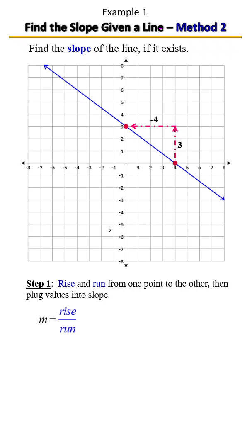You can also, going from one point to the other, start with the y intercept. And instead of rising up, we'll fall down 3 — that's still going to be your numerator. And we're going to run a 4 to the positive side, so that's a positive 4. In either case, whether the negative is on top or bottom, your slope is still negative 3 fourths.